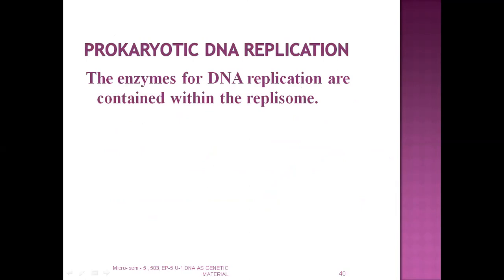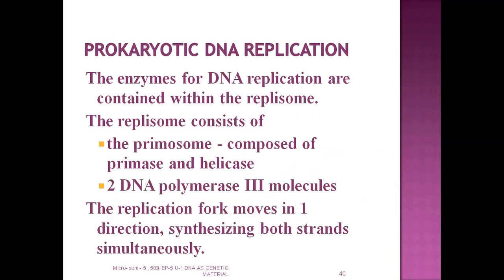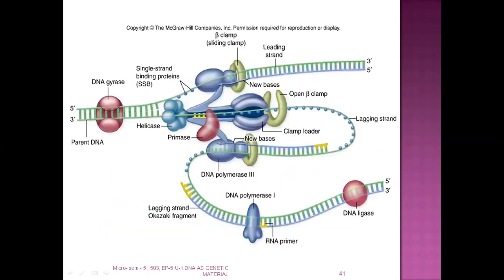The enzymes for DNA replication are contained within the replisome. The replisome consists of the primosome and DNA polymerase III. The replication fork moves in one direction on both strands simultaneously. You can see this clearly in the figure — take a few minutes to study this slide so you are clear about how DNA replication proceeds. Within upcoming videos we will study the whole process of replication in detail. Various enzymes are located here and help in the process of DNA replication.